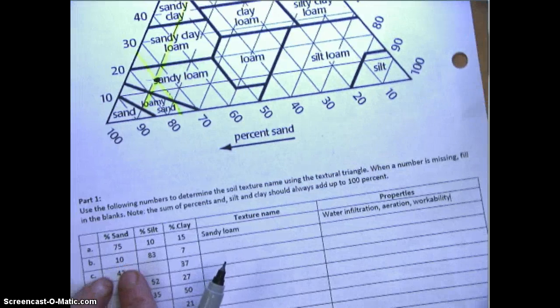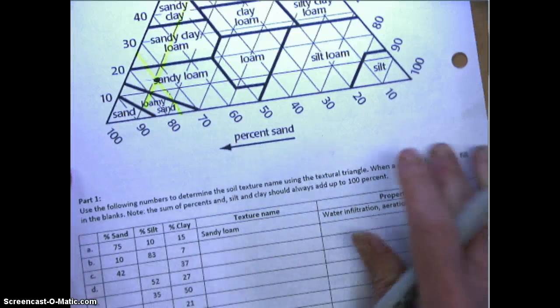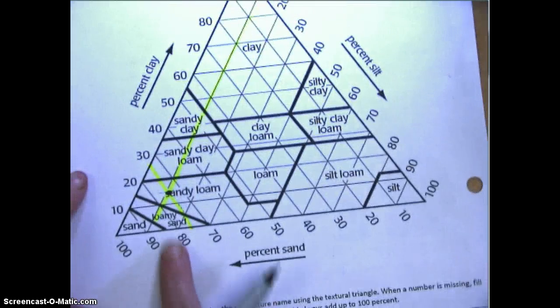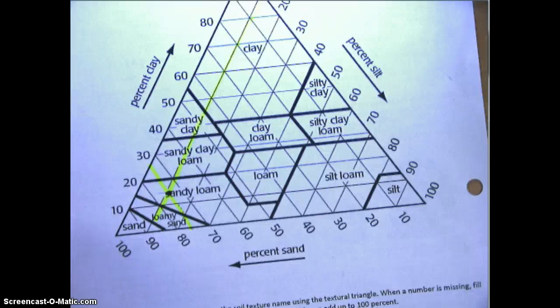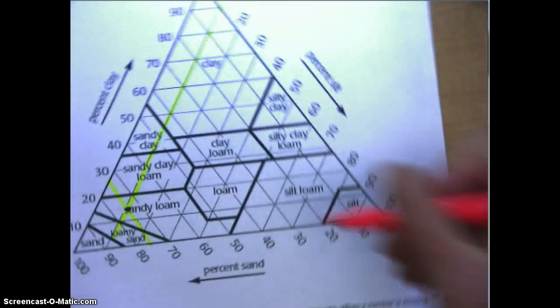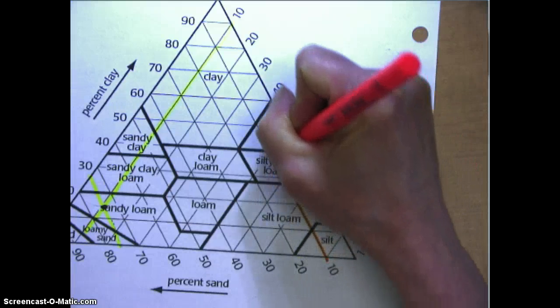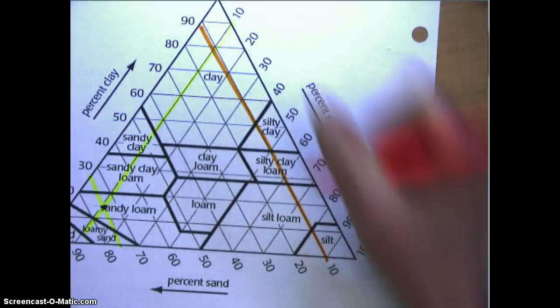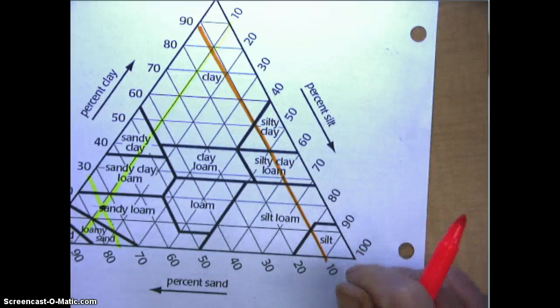Let's do the second one together. We've got 10% sand, 83% silt, and 7% clay. We're going to find 10% sand, and I might use a different color. You can start off with a few different color highlighters. Remember I told you to go the line on the left, not the right.